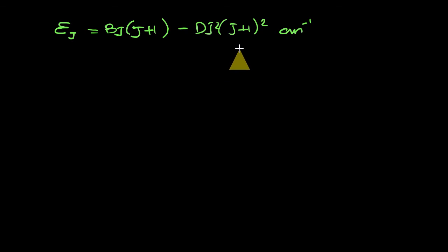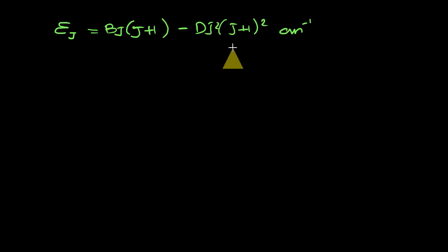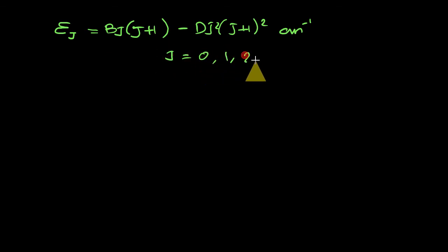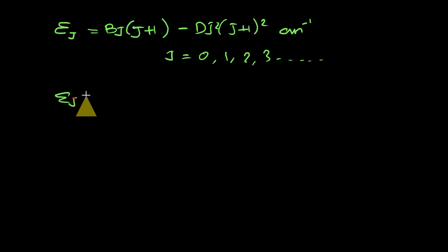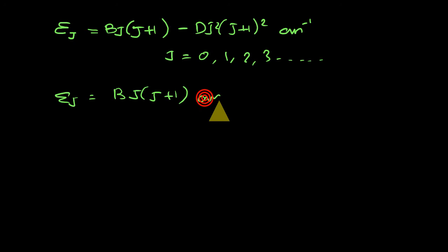A very quantitative analysis should include the centrifugal distortion term, but for understanding how the Raman spectrum arises we can simply neglect it. So we write ε_J equals B·J(J+1) centimeter inverse, where B is the rotational constant and J is the rotational quantum number with values 0, 1, 2, 3, etc.